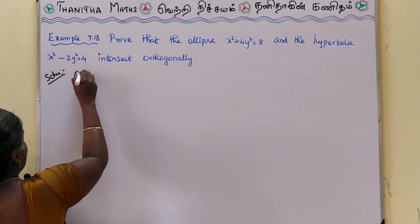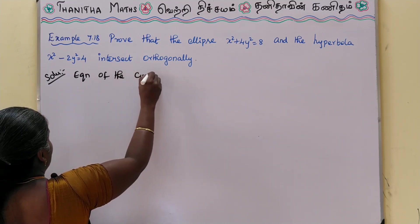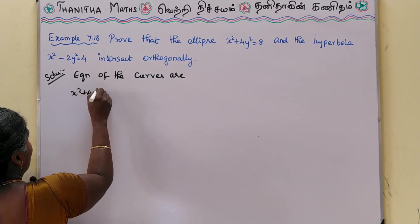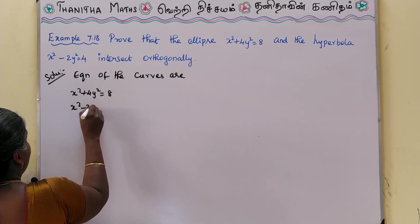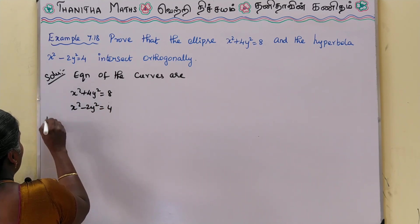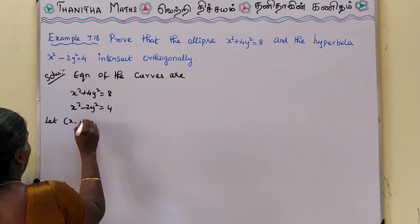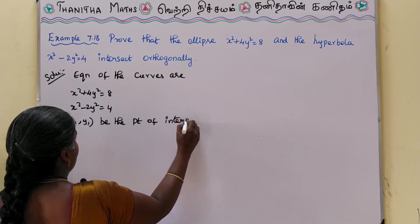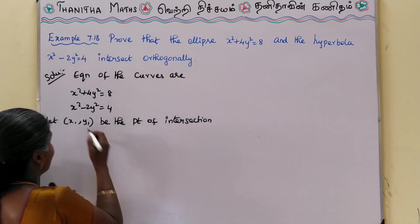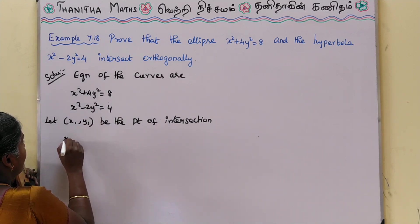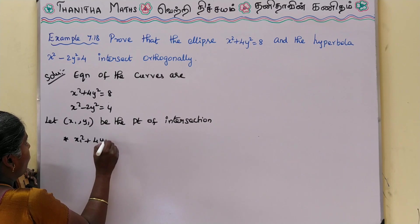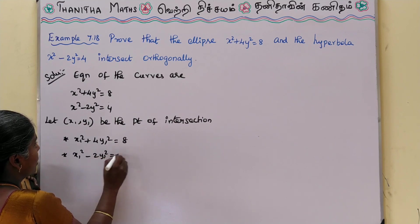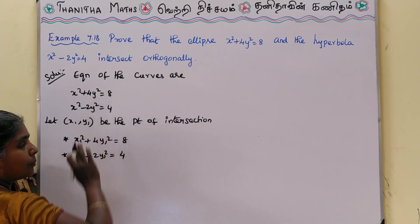So the equations of the curves are: x² + 4y² = 8 and x² - 2y² = 4. Let (x1, y1) be the point of intersection. So at the point of intersection: x1² + 4y1² = 8 and x1² - 2y1² = 4. These are the values at the point where the two curves meet.